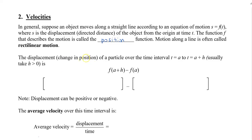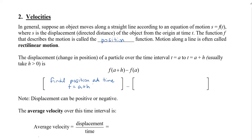The displacement — the change in the position of a particle over the time interval from T equals A to time T equals A plus H — is given by F of A plus H minus F of A. A plus H is a time that is a little bit more than A, so F of A plus H is the final position at time T equal to A plus H. If I subtract from that the initial position at time T equals A, then I'll have my displacement. Notice that displacement can be a positive or a negative number.